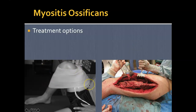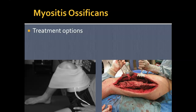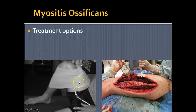Treatment for myositis ossificans involves placing the patient in a knee-flexed position with ice. However, if true myositis ossificans is present, the patient won't want to be moved into that flexion position, so it may require two clinicians to get the patient into the proper treatment position.